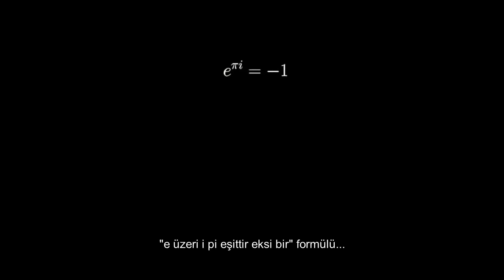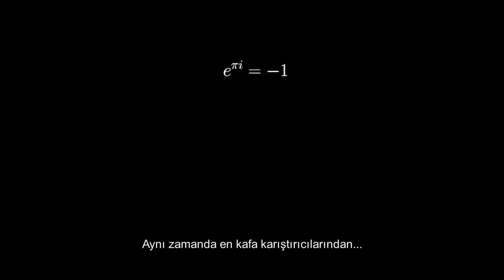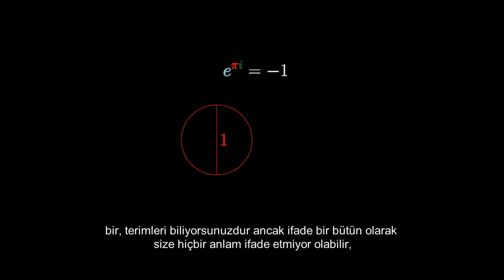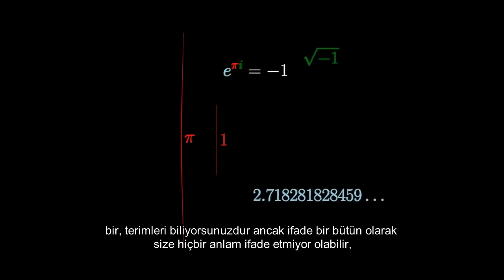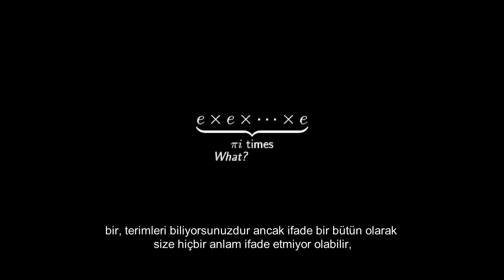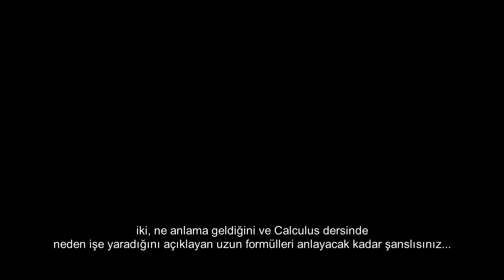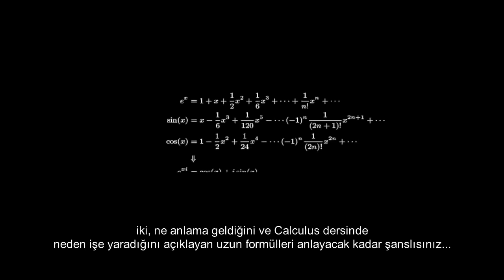e to the pi i equals negative 1 is one of the most famous equations in math, but it's also one of the most confusing. Those watching this video likely fall into one of three categories. First, you know what each term means, but the statement as a whole seems nonsensical. Second, you were lucky enough to see what this means in some long formulas explaining why it works in a calculus class, but it still feels like black magic.